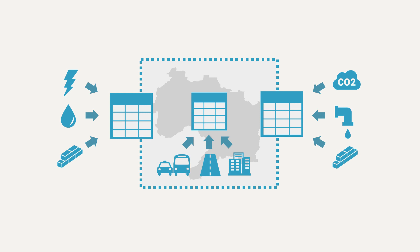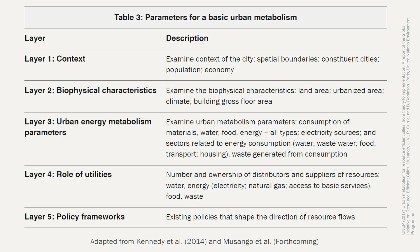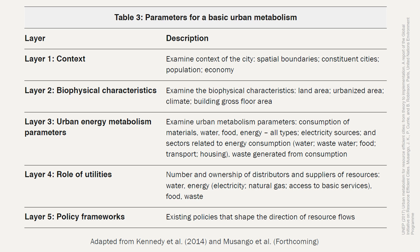An urban metabolism study is often described as a large data collection process. A typical study starts by analyzing the context of a city and defining its spatial boundaries, which define the system boundaries for which flows will be studied. Data about the flows entering and exiting the city — including water, energy, food, waste, etc. — are then compiled. Finally, data on infrastructure, utilities, and policies are gathered to better understand the factors that may influence or control metabolic flows.